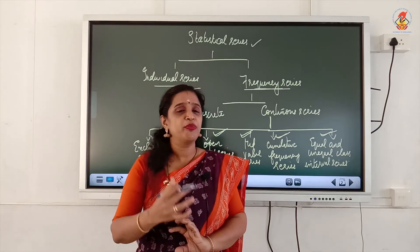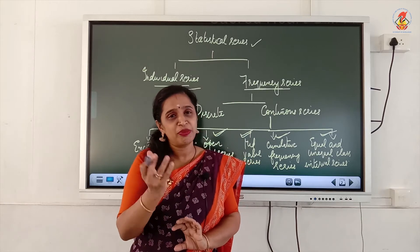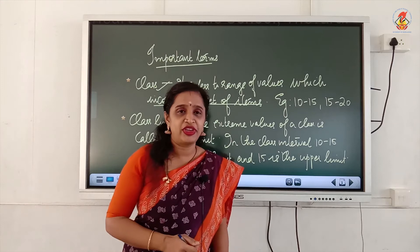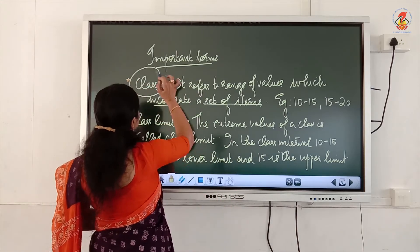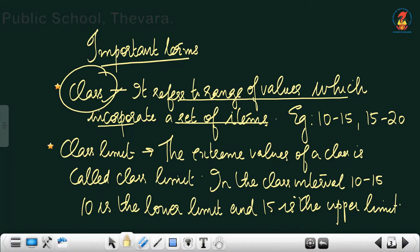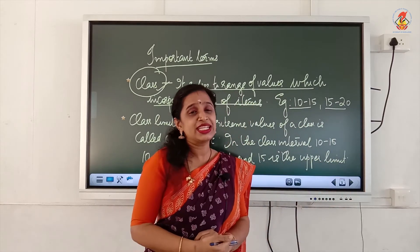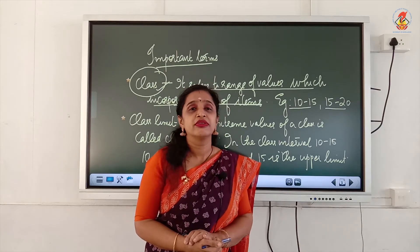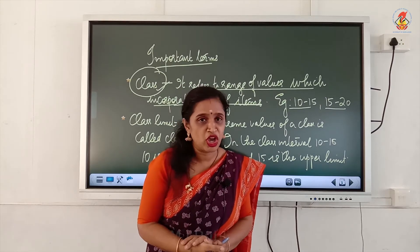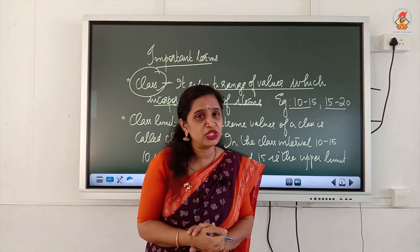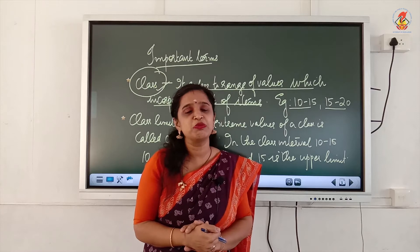Before moving on to the different types of continuous series, we have to be familiar with certain terms which you have already learned in class 10. The first term is 'class.' A class refers to a range of values which incorporates a set of items. For example, 10 to 15. If we assume these are marks from an economics class test, four students have secured marks between 10 to 15 — so the frequency is four.